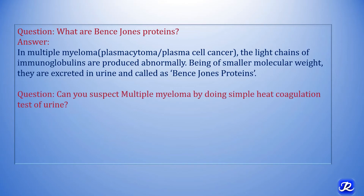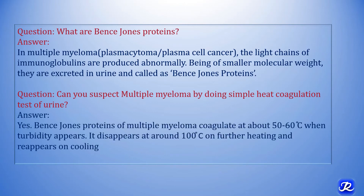Can you suspect multiple myeloma by doing a simple heat coagulation test of urine? The answer is yes. If Bence Jones proteins are present in the urine sample and you heat it at 50 to 60 degrees centigrade, the Bence Jones proteins coagulate and turbidity forms. On further heating at around 100 degrees centigrade, that turbidity disappears, and on cooling it reappears. By doing this simple test, one can suspect multiple myeloma.